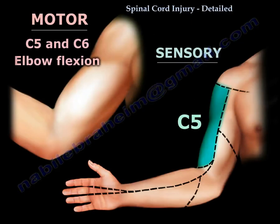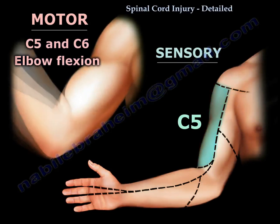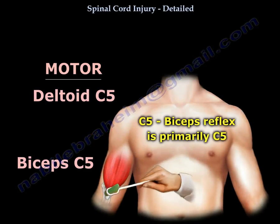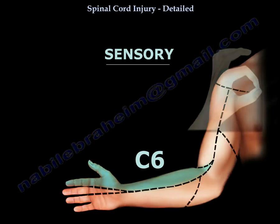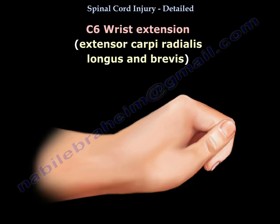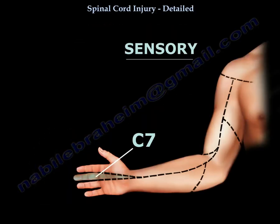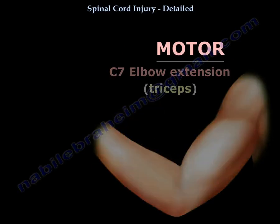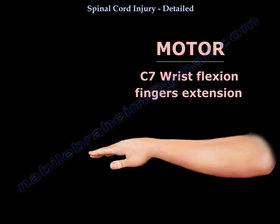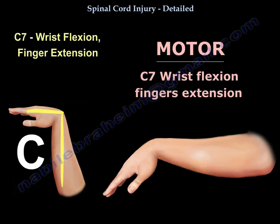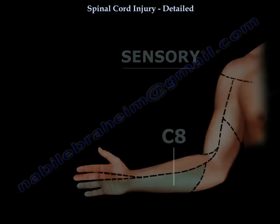Functional levels: C5 - deltoid and biceps. C6 - wrist extension. C7 - triceps, wrist flexion, and finger extension. C8 - finger flexion.